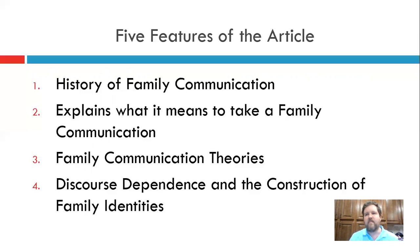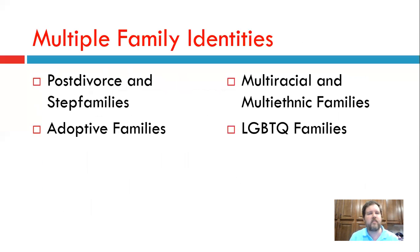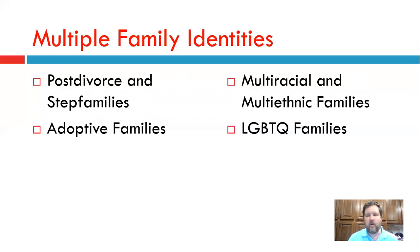I don't want to talk too much about discourse dependence here because that'll come into play with session three. But regarding the construction of family identities: they acknowledge that families are different and that some families need more explanation because they're more unique or not what people expect when they think of family — it doesn't mean they're not a family. Multiple family identities are looked at in the article, including post-divorce and step-families, adoptive families, multiracial and multi-ethnic families, and LGBTQ families, with a review of research that has advanced each area.